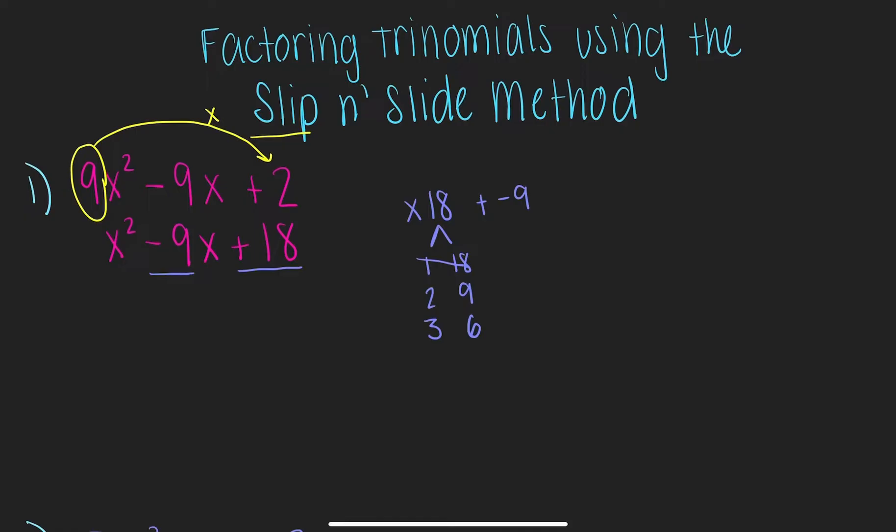1 and 18 could never get me negative 9. And 2 and 9 could also never add or subtract to get me negative 9. But, negative 3 and negative 6, negative 3 minus 6 is negative 9. So, we're going to use these two factors.